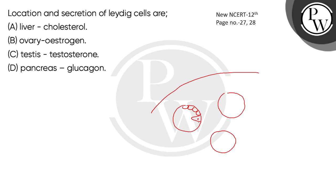One is a pyramidal-shaped cell and the other is a normal-shaped cell. The pyramidal-shaped cells are called Sertoli cells.